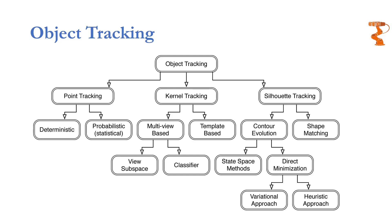Therefore, important things for an object tracker are object representation, selection of image features for tracking, object detection, and object tracking methods. Various object tracking methods shown in this tree diagram differ in how they approach these aspects.